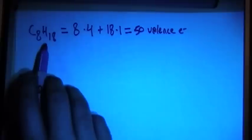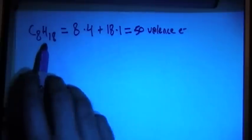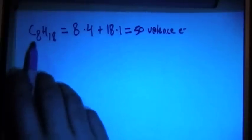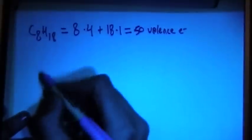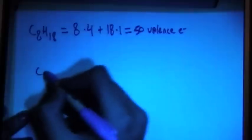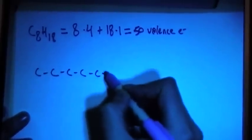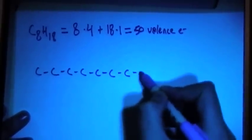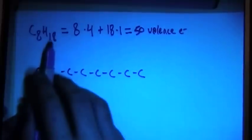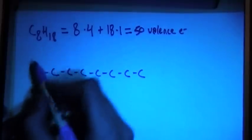Hydrogens cannot be center atoms because they can only bond once. That means that the carbons have to be all in the center. So there's 8 of those. Let's go ahead and draw those out. Okay, 8 carbons, and then we have the 18 hydrogens. Let's go ahead and draw those in.